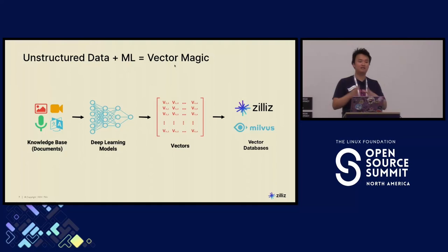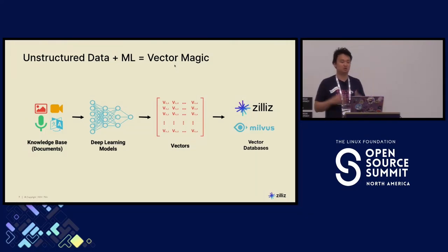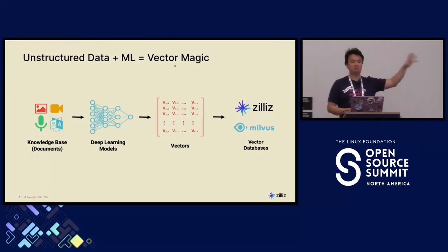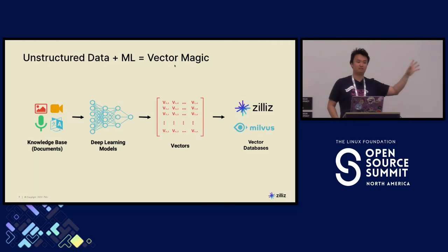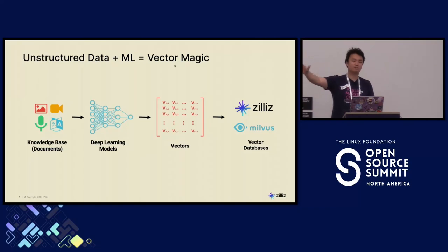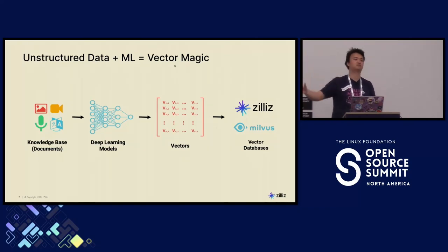The way that you get a vector embedding is you take your data — any sort of data: images, PDFs, audio, video, whatever — and you put it into a neural network, but you cut off the last layer. You take the output from the second-to-last layer and put it into a vector database.